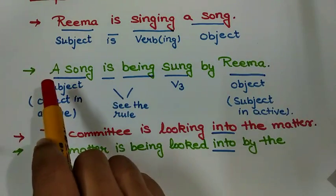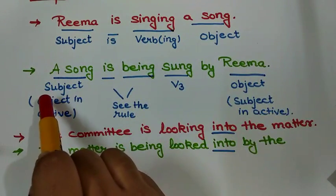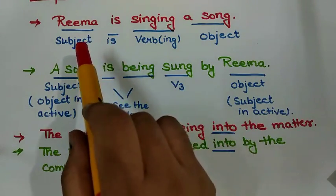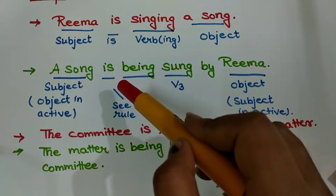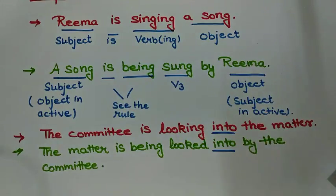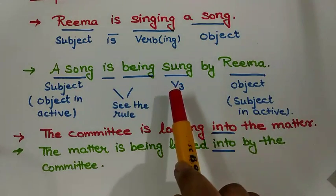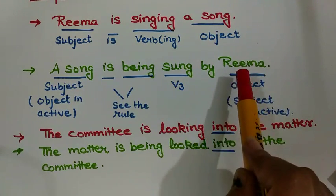So 'a song', this object, is now acting as a subject. 'Is' again, the helping verb. 'Being' is used here to show that our verb is in continuous form. Then comes the third form of verb, and then 'by' and then Rima.